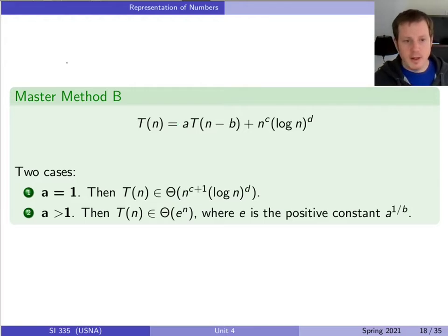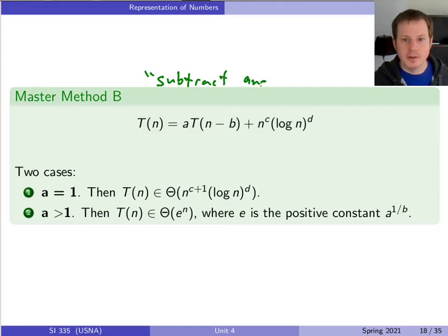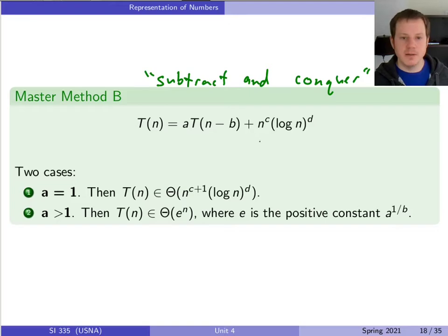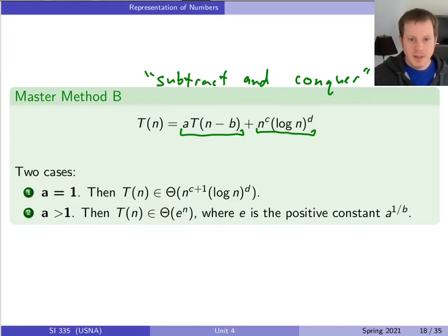Here is master method B, which I'll call it. It's not as common as the first one, and it's much easier to apply. While the first one was for divide and conquer recurrences, this one is for subtract and conquer type problems — any problem where you're subtracting a constant amount every time from the original input size. We have extra work on one side and the recursive part on the other, and the form is almost exactly the same as master method A, except instead of N divided by B we have N minus B.